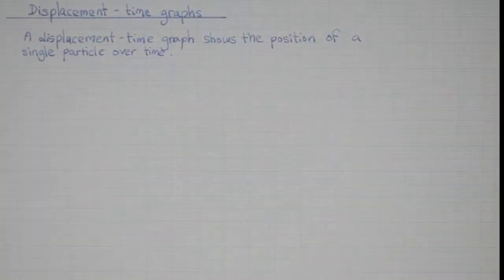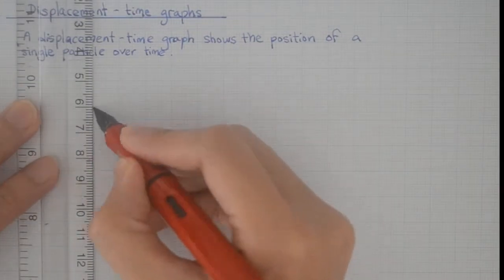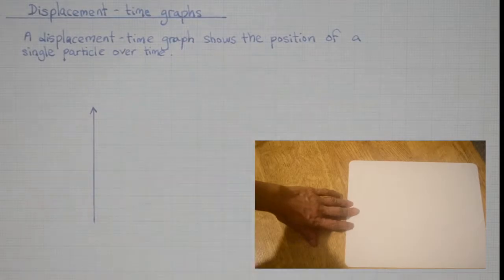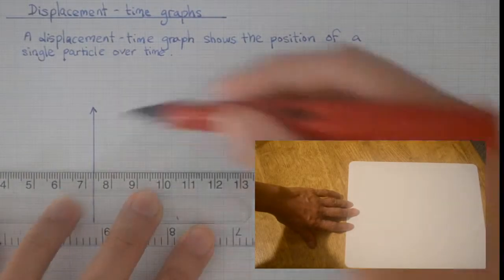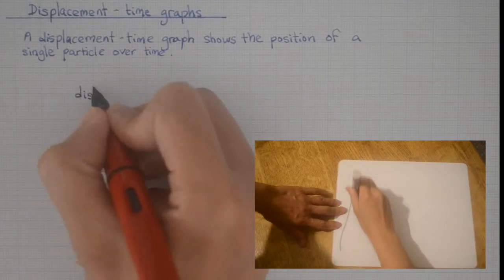To prove to yourself that a particle traces out a sinusoidal shape over time, you can do this at home. Take a pen and hold it down on a sheet of paper. Ask someone else to pull the sheet of paper to the left.